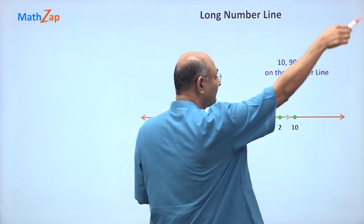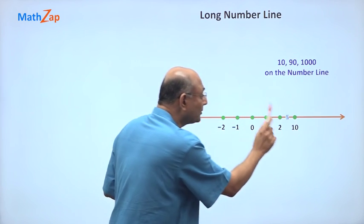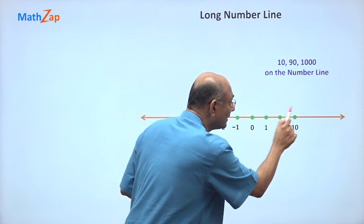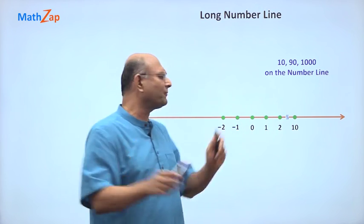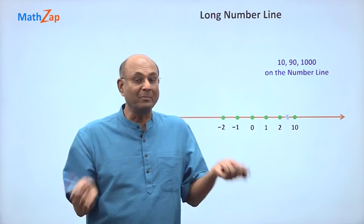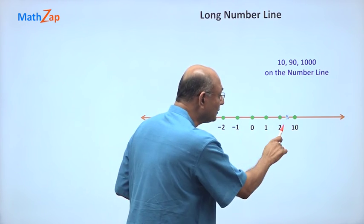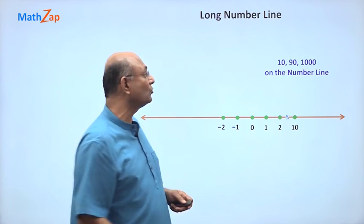2, 3, 4, 5, 6, after some time you will get 10. So when I put it here, it means this is not 1. The break tells you from 2 to 10 there are a bunch of points in between. How many? We don't know. But what we do know is that 10 comes after 2.